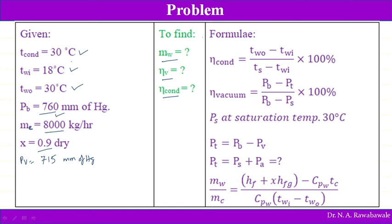Condenser temperature is 30°C and the condensate temperature is not separately given, meaning there is no under-cooling. The water outlet temperature equals the condenser temperature (30°C), so the condenser efficiency is 100 percent — an ideal case. PS can be taken at 30°C from steam tables. PB − PT over PB − PS gives vacuum efficiency.